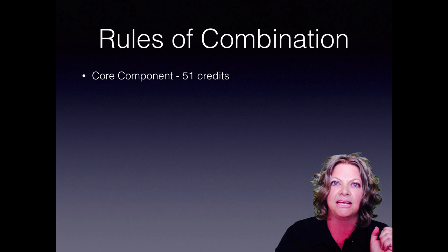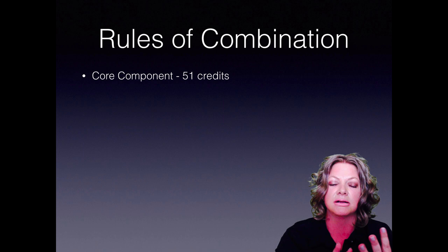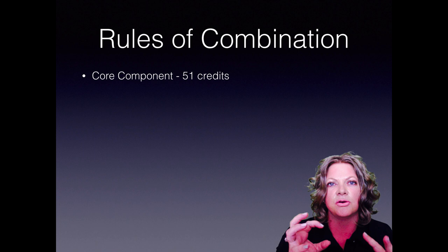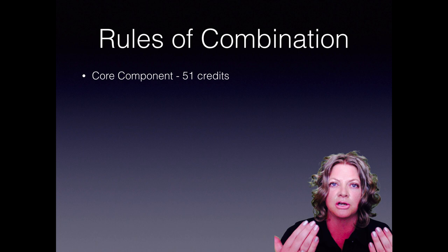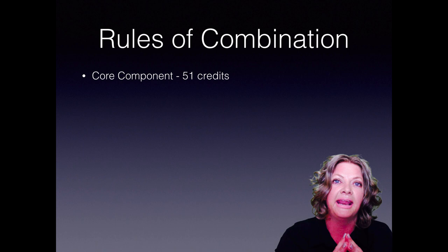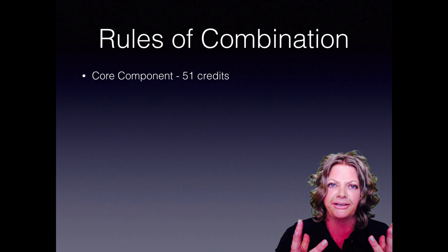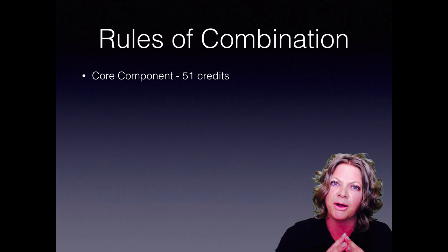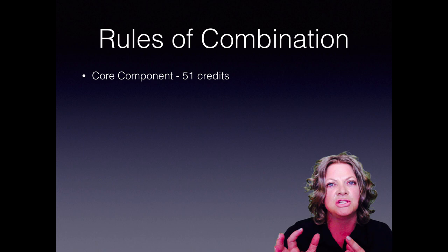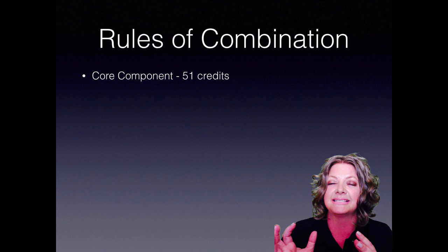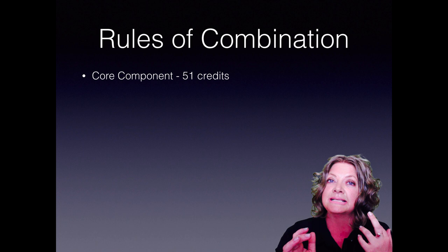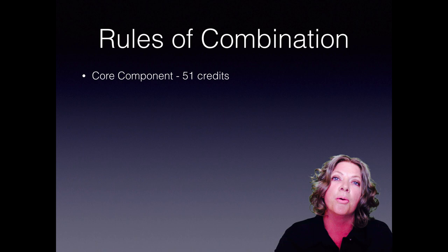Before I continue, I need to get a little bit technical. This qualification consists of three parts: Core, Fundamentals, and Electives. These credits are combined to meet the rules of combination for the full qualification. A lot of people come to me saying they only need 20 or 30 more credits, but upon close inspection, the majority of their existing unit standards often belong to the elective component — meaning they still need all the core and all of the fundamentals regardless.